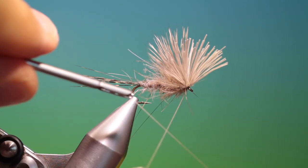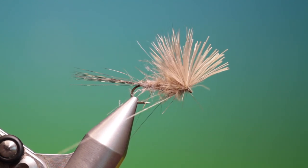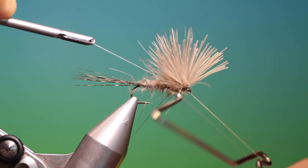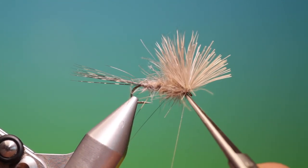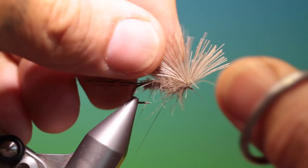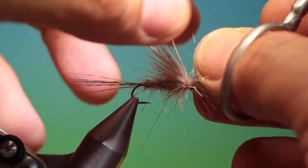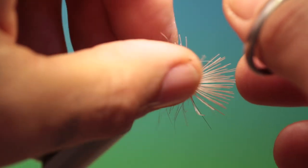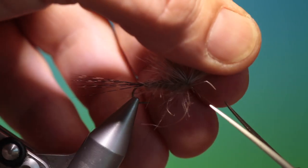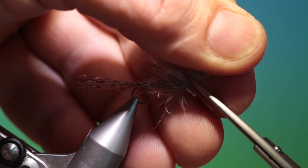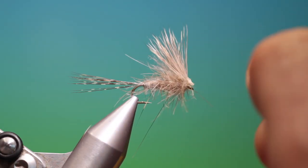Take our whip finisher. Give it a couple. Remove that. Bring all the butt ends forward. Let's turn that that way. I'll trim those off. Leaving a little head. And that's it.